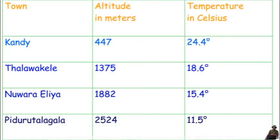Data from Sri Lankan locations illustrates this: Kandy at 447 meters has a temperature of 24.4°C; Talawakele at 1375 meters has 18.5°C; Nuwara Eliya at 1882 meters has 15.4°C; and Pidurutalagala at 2584 meters has 11.5°C.